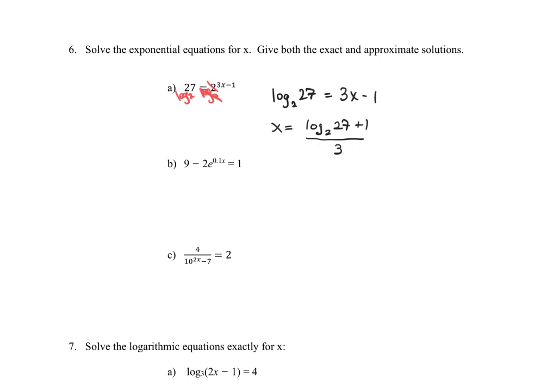That is the exact form. For the approximate solution, use the change of base formula: log base 2 of 27 becomes log 27 divided by log 2. Then add 1 and divide by 3 — entering this sequence into a calculator gives approximately x equals 1.92.